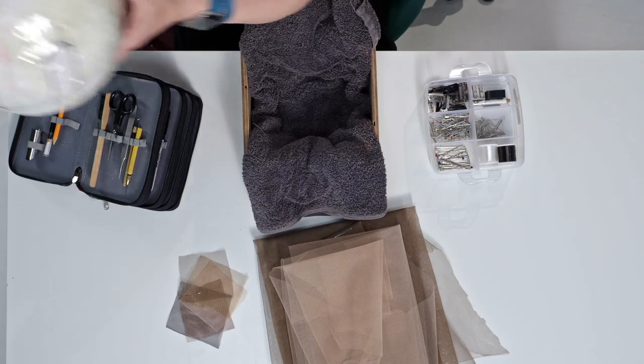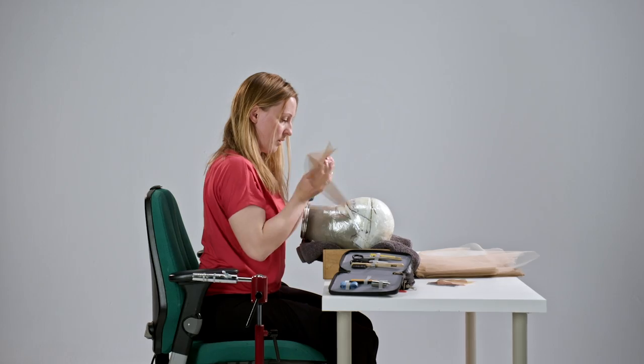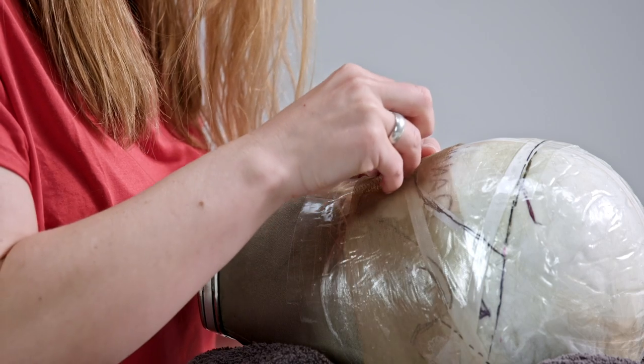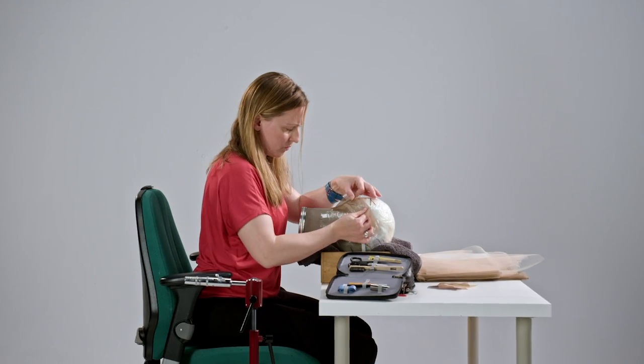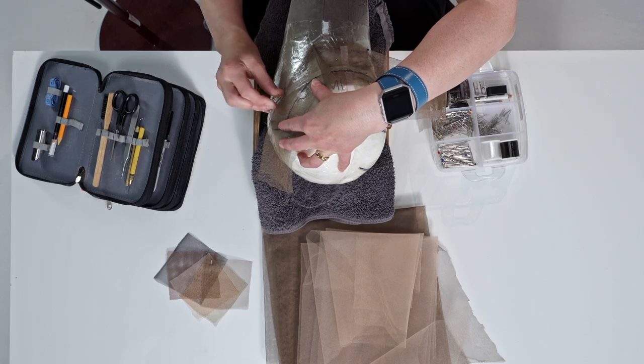The lace mesh is the fabric we make the foundation from and that we knot the hair into. It has hexagon shaped holes allowing us to knot on different bars to create natural movement and lift.